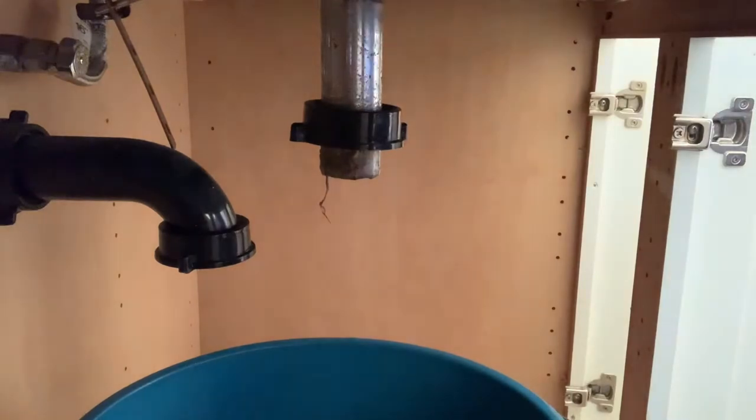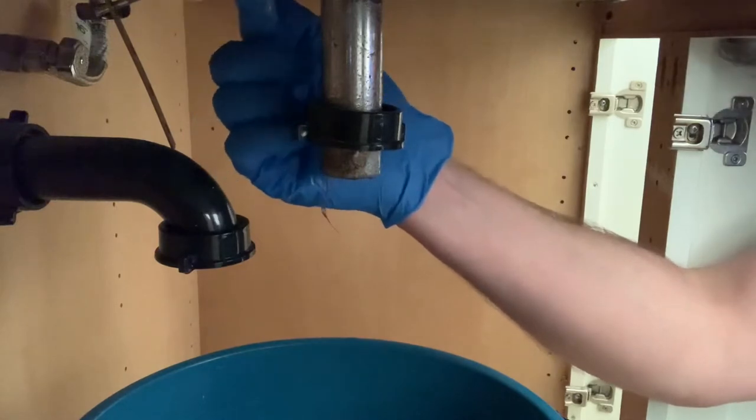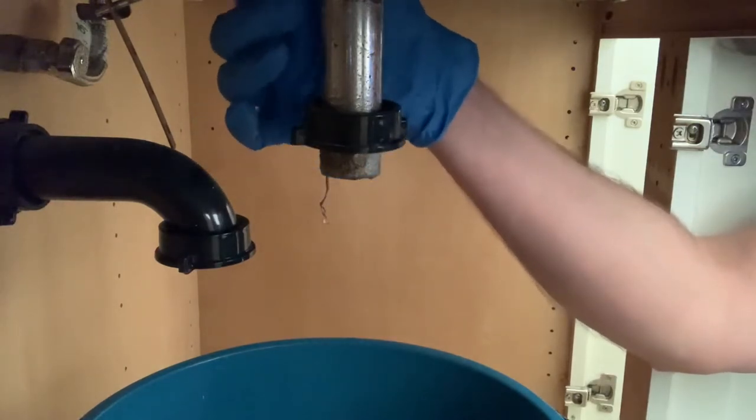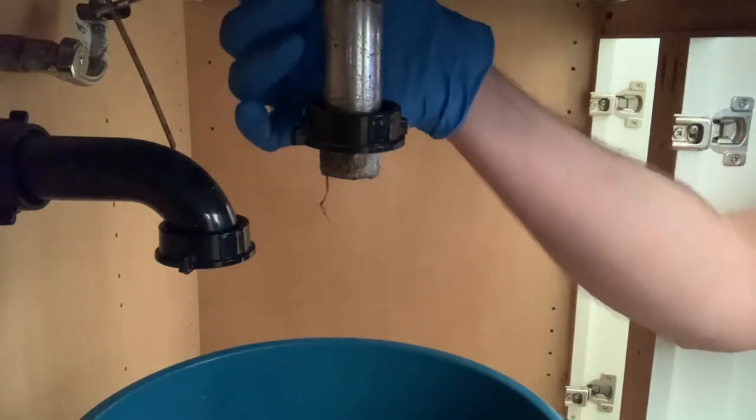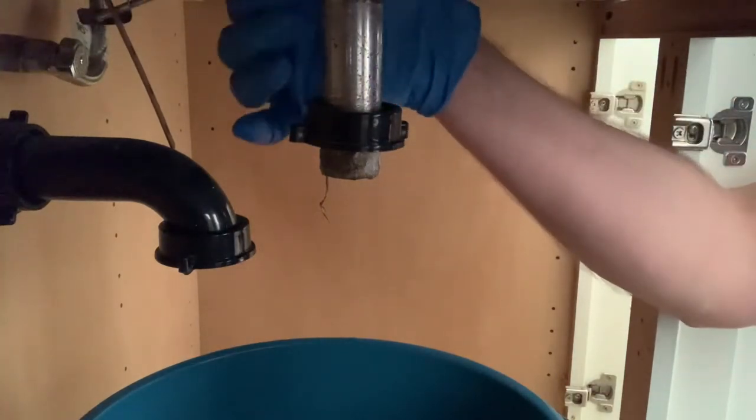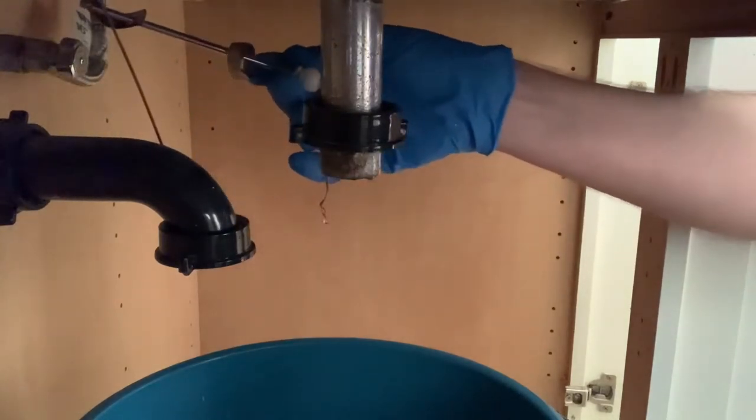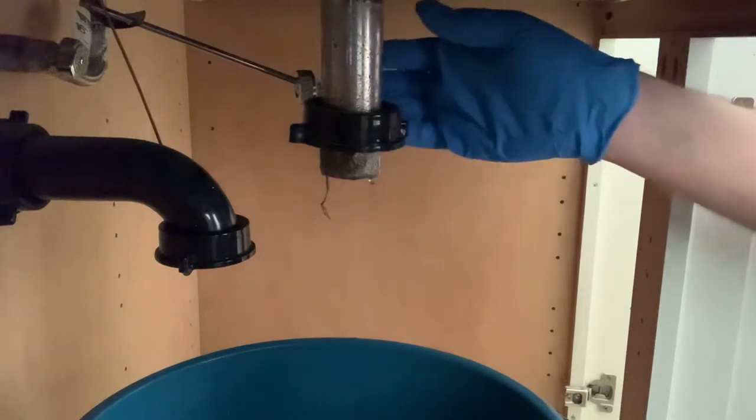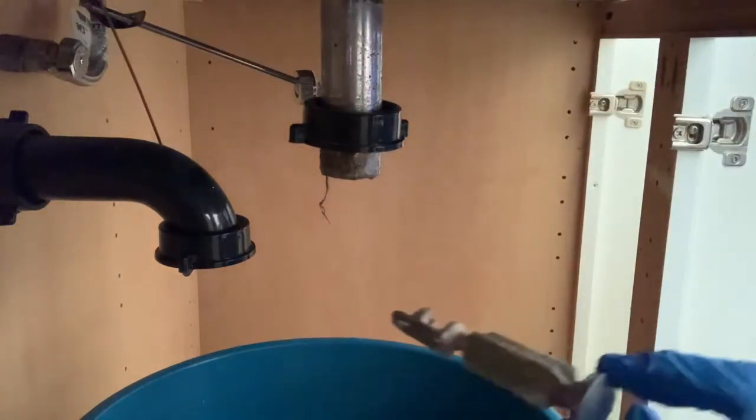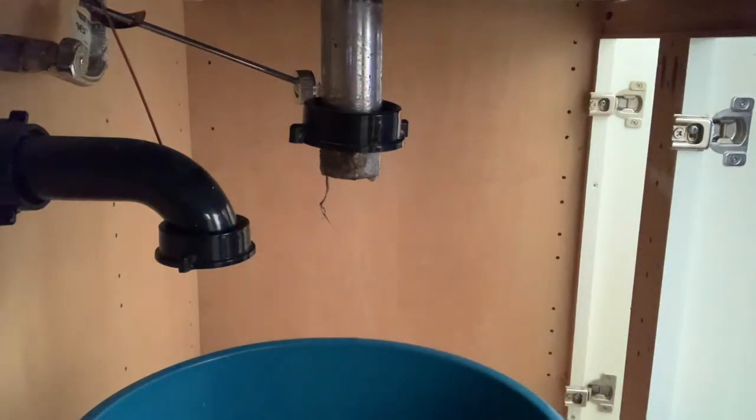Now we're wondering where this hair ball is. So I'm going to take off the pivot rod, which is a horizontal rod. I don't think you can see it on camera, but it connects the drain stopper to this lift rod at the back of the faucet. Just a matter of unscrewing it and pulling it out. And it's clean. Where the heck is this hair? I'm going to go up on top and push the hair down. Hopefully it should land in the bucket.